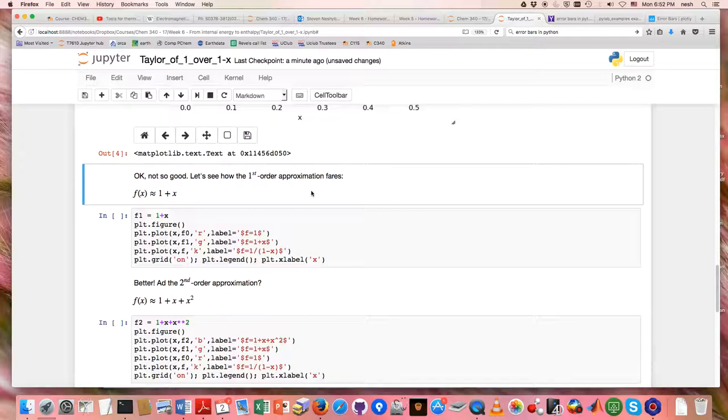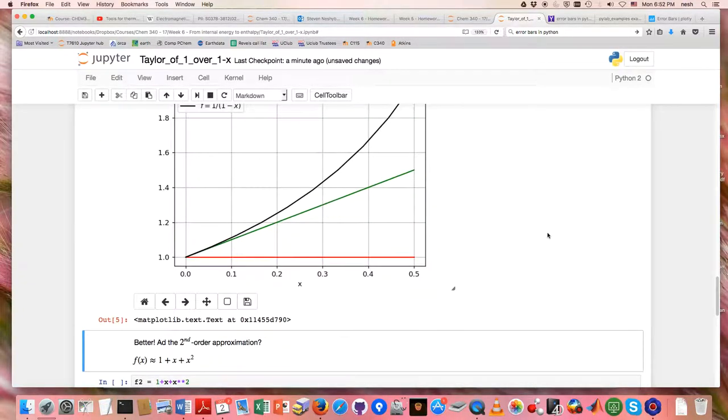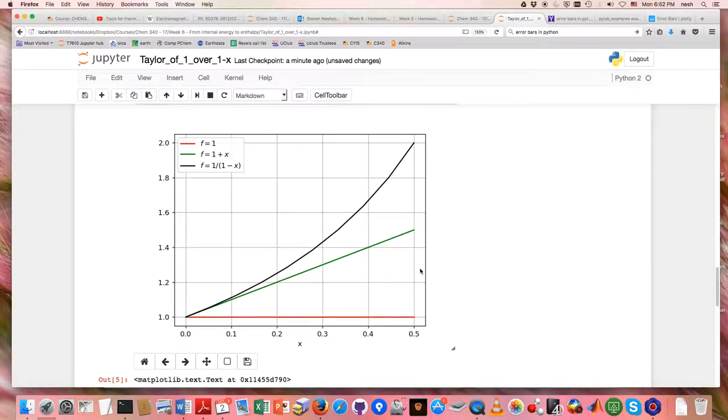Let's try the second term. That is to say, first order approximation has us include x there. And what does that look like? Well, that's obviously the equation for a straight line, green here.